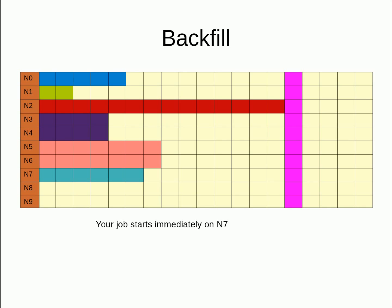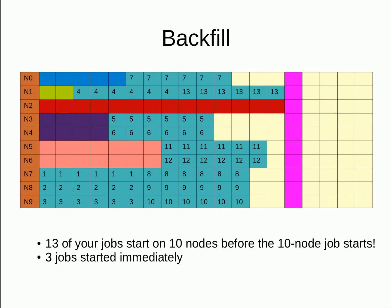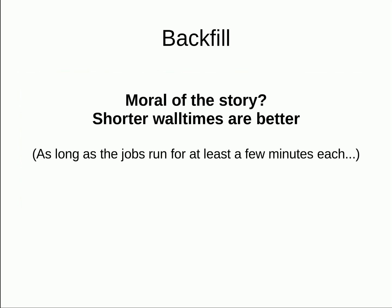But that's not all. What if you want to submit lots of 6-hour jobs? 13 jobs will start on 10 nodes before the 10-node job starts. Three jobs would start immediately on nodes 7, 8, and 9. What's the moral of the story? Shorter wall times are better. Just be sure not to submit thousands of 30-second jobs. Each job results in some overhead for the scheduling system as it's submitted, scheduled, running, and in the accounting database after its completion. So a really short job results in lots of overhead. Make sure your jobs are at least 10-15 minutes each.